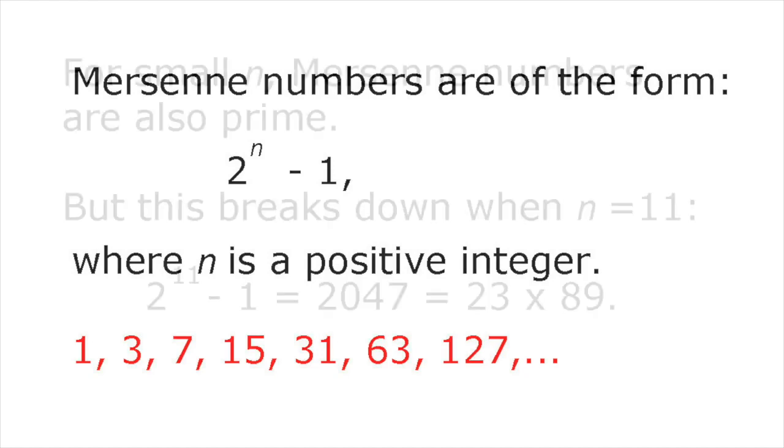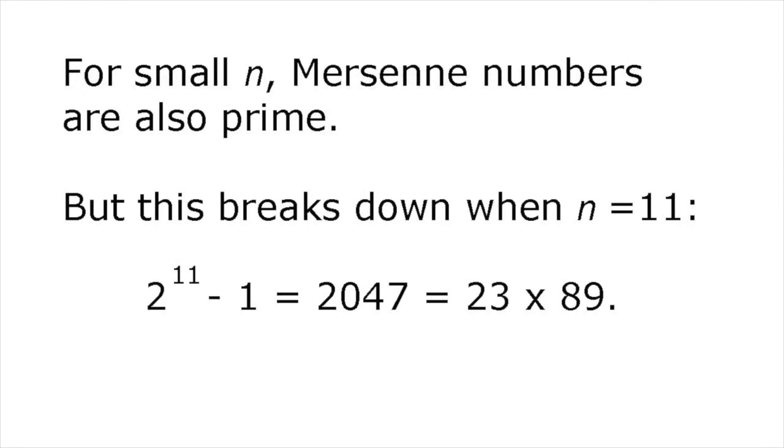For small values of n, whenever n is prime, the corresponding Mersenne number is also prime. For example, when n equals 7, 2 to the n minus 1 equals 127, which is prime because it has no factors other than 1 and 127.